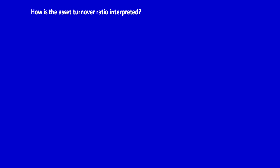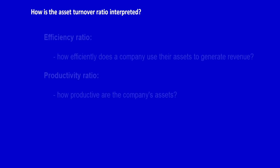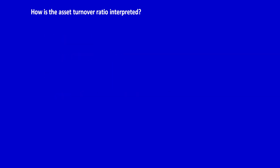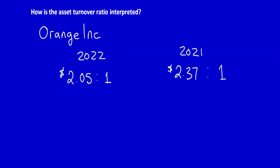How is the asset turnover ratio interpreted? This ratio is an efficiency ratio and a productivity ratio — it measures how efficiently a company generates sales from the use of their resources, their assets. It indicates how many dollars in sales were generated from every dollar of assets.